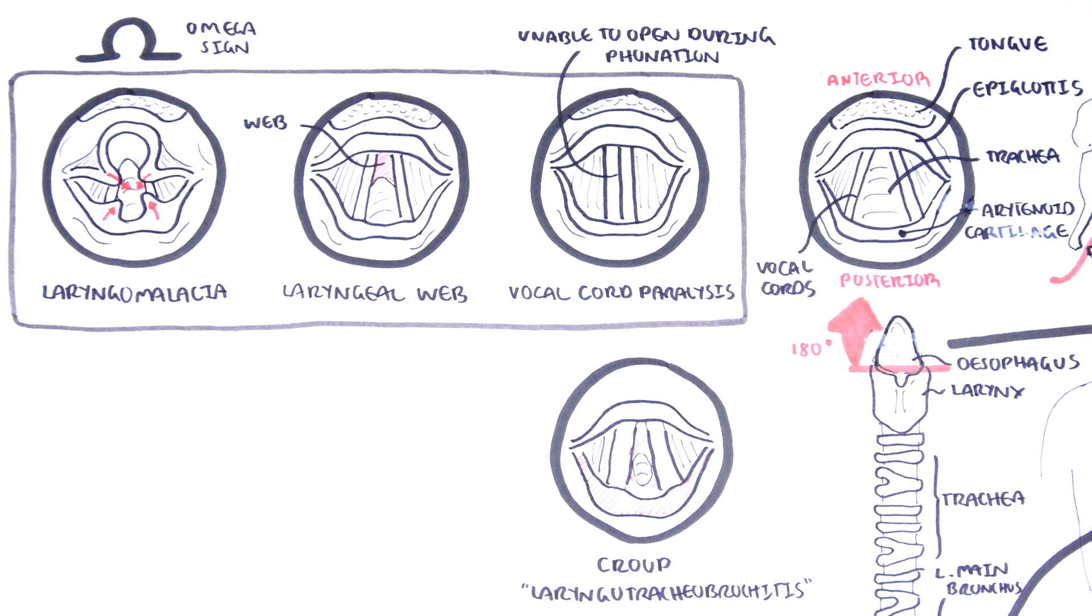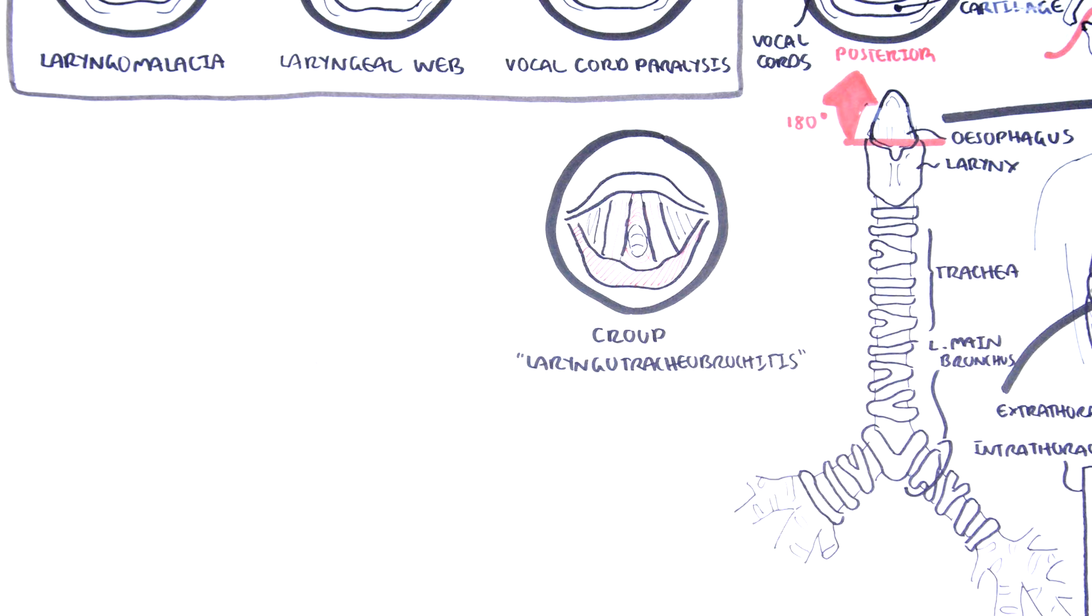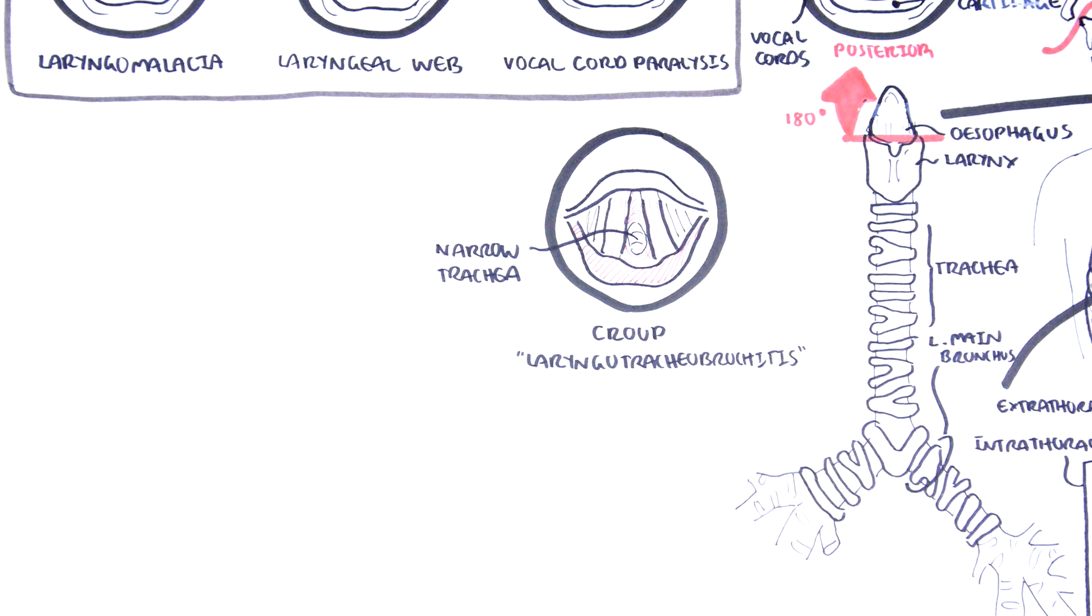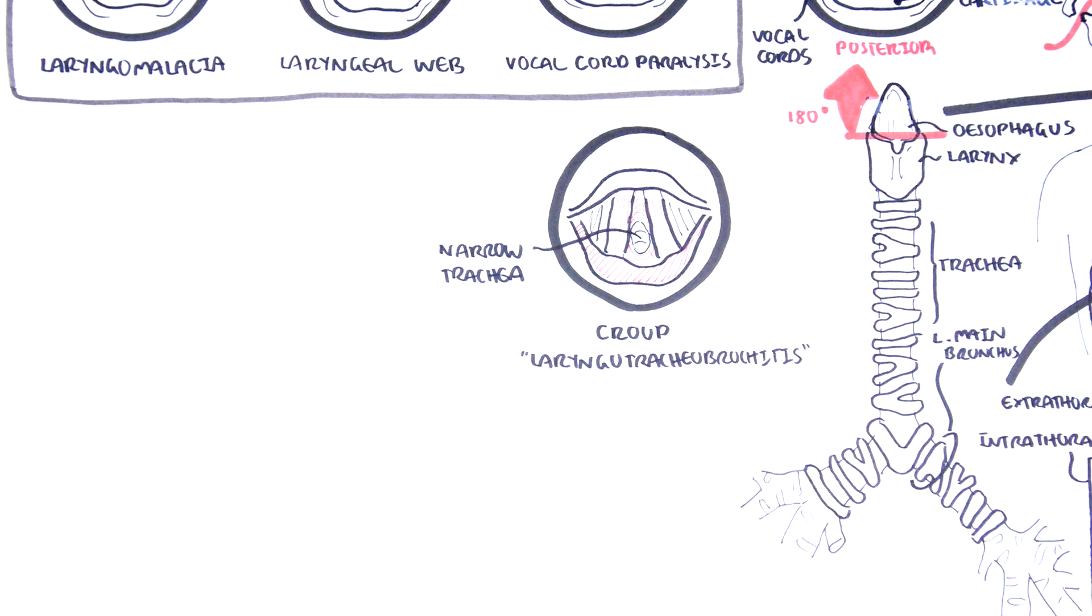The most common cause of acute stridor in childhood is laryngotracheobronchitis, or croup. As the name suggests, it is inflammation of the larynx, trachea, and bronchus. Despite being both an extrathoracic and intrathoracic cause of stridor, it is usually an inspiratory stridor because mostly the larynx and trachea are involved. The main cause of croup are viruses, specifically parainfluenza virus.